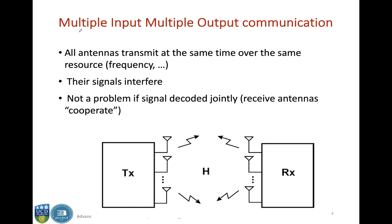As the name suggests, MIMO means multiple input and multiple output. You have multiple antennas on the transmitter side, and in the receiver you also have multiple antennas. All antennas transmit at the same time over the same resource, which can be a frequency, a waveform, or in some cases a different polarization. When multiple antennas transmit at the same time, the signals will interfere with each other. However, this interference in MIMO is used as an advantage.